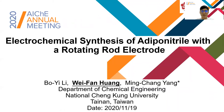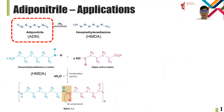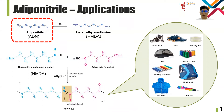Good morning, everyone. My name is Wei-Fan Huang. I come from National Cheng Kung University in Taiwan. I'm very glad to present our work here. The topic is electrochemical synthesis of adiponitrile with a rotating rod electrode. First, I will introduce the applications of adiponitrile. We call it ADN. It is a raw material to produce nylon-66. Nylon-66 is widely used in car industry and daily necessities, and its demand continually increases. Therefore, it is necessary to develop ADN production technology. In conclusion, the research on ADN is very important.